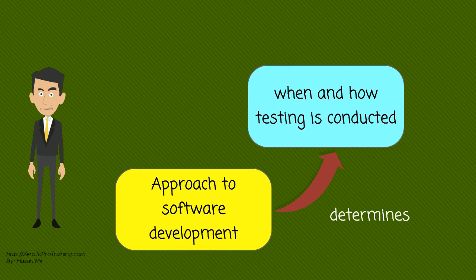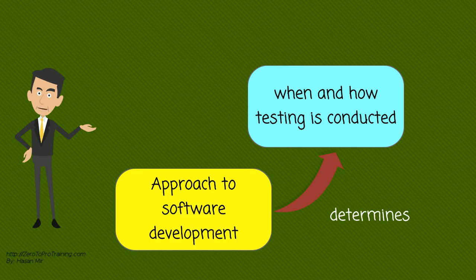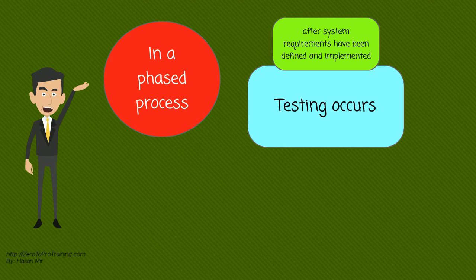The overall approach to software development often determines when and how testing is conducted. For example, in a phased process, most testing occurs after system requirements have been defined and then implemented in testable programs.